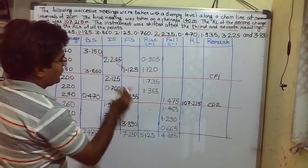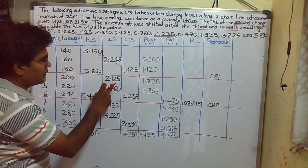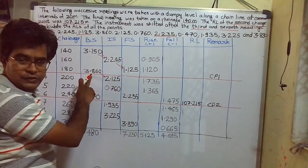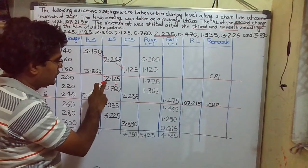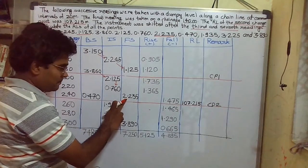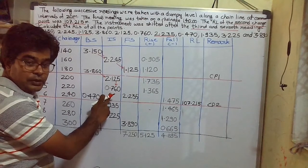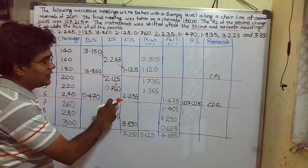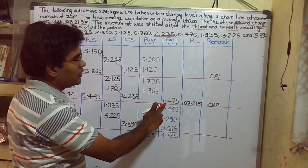Next, 2.125 minus 0.760 gives a rise of 1.175. Now the forward reading is increasing, which means the terrain is going down — there is a fall. So 0.760 minus 2.235 gives minus 1.475, which we write in the fall column.